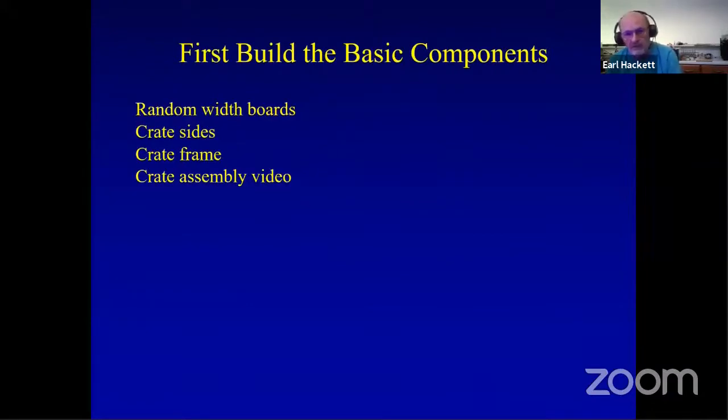The first thing we're going to do is we're going to build the basic components of the crate. And one of the things is, these are made out of really junk lumber, really terrible stuff. And so I'm going to make random width boards just so that you see cracks between them. We'll build the crate sides, the crate frame, which was the heavier structure that held the whole thing together. And then I'll do a little video on actually how we put these together.